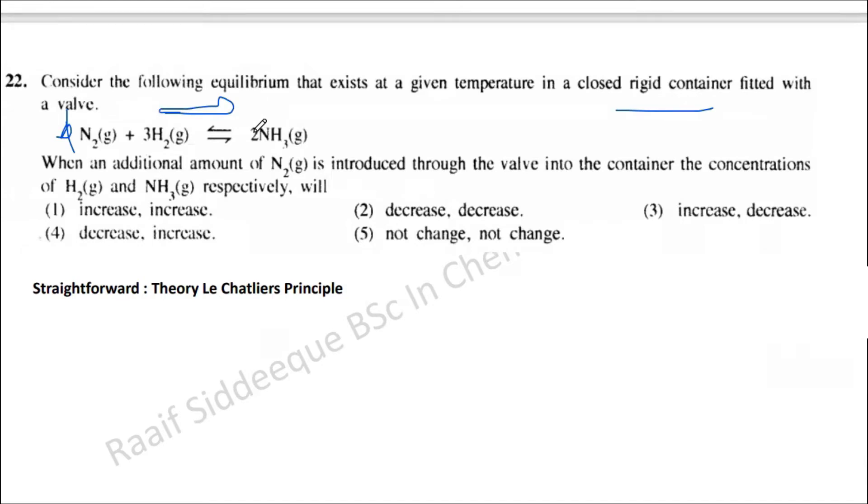A new equilibrium where the equilibrium constant is still the same because at a given temperature. What is normally going to happen when the forward reaction is favored? The concentration of ammonia will increase while the concentration of H2 gas is going to decrease.